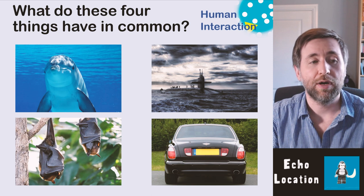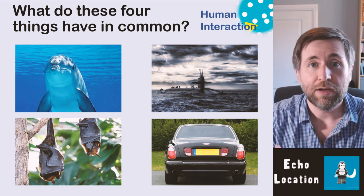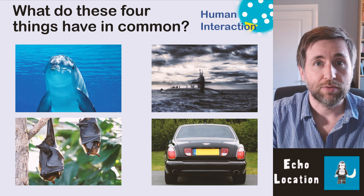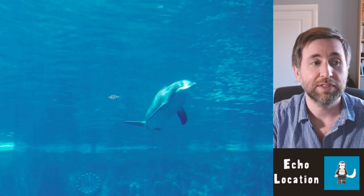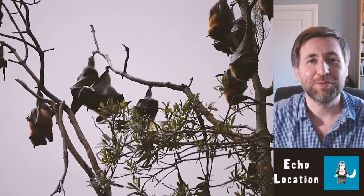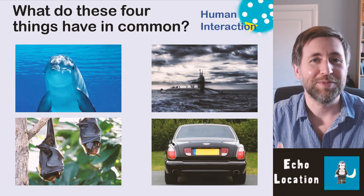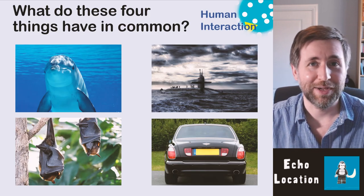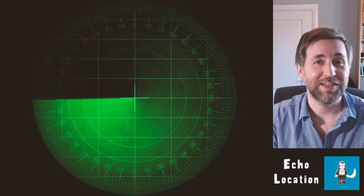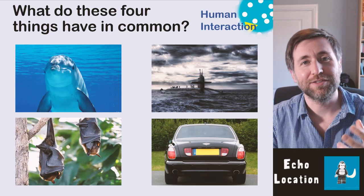These things all use sonar. Sonar means sound waves being used for echolocation: sound waves are emitted from a source and we wait for the pulse to echo back. A dolphin does this, a bat does this — they don't actually perform calculations but they get a sense of how far things are away using that reflected pulse. In a submarine, sonar reflects back off objects so they can know what's around them underwater.